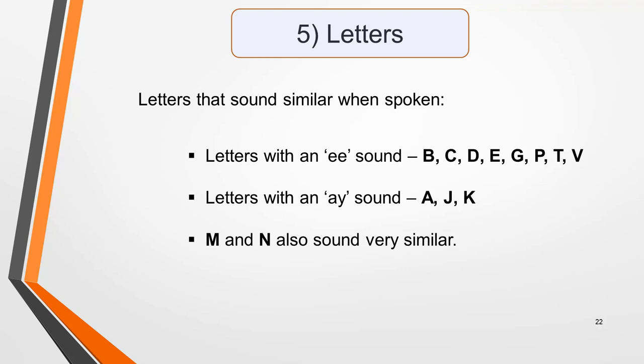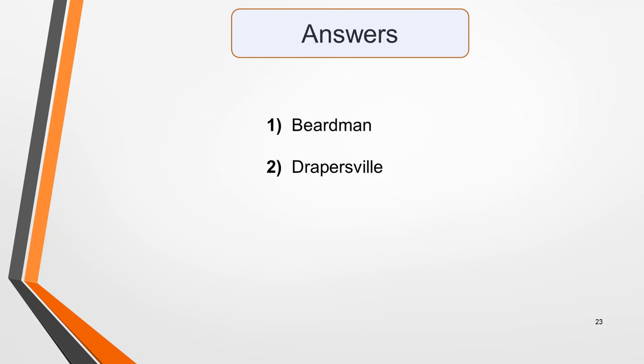Number one: My surname is Beardman — that's B-E-A-R-D-M-A-N. Two: The hotel is in Drapersville Street — I'll spell that for you: D-R-A-P-E-R-S-V-I-L-L-E. Did you get caught out by the double L, meaning two L's? Listen again if you need to.